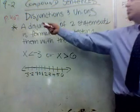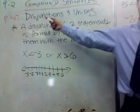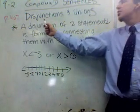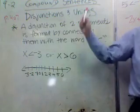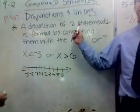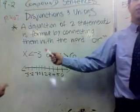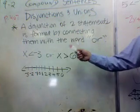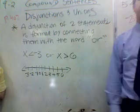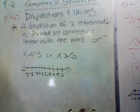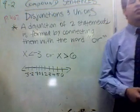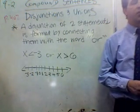Alright, now we're moving to page 407, same section, 9.2, disjunctions and unions. A disjunction of two statements is formed by connecting them with the word 'or'. 'Or' provides more possibilities for the solution set to be true.